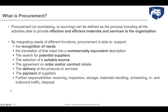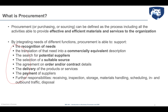Some of the activities that are part of the procurement job include recognizing need, finding potential and reliable suppliers, taking care of contracts, taking care of delivery of products and services as requested by the user, paying the supplier, and then, according to the company risk, taking care of receiving, inspection, storage, material handling, and so on.